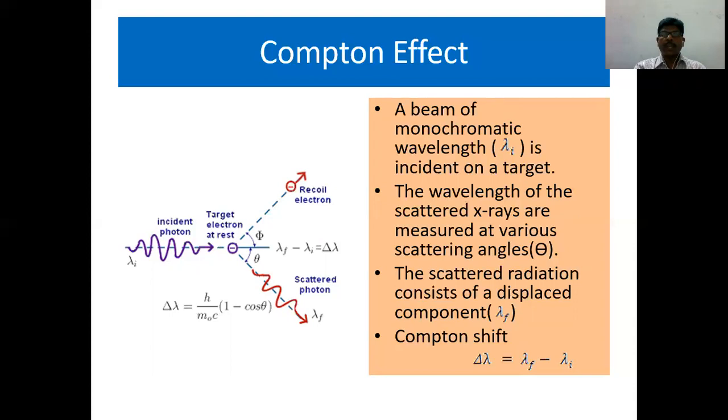The Compton effect as we have seen contains two components: unmodified component and a modified component. Lambda I is the unmodified component. Lambda F is the modified component. Lambda F is greater than lambda I. Why does this happen? When the photon loses energy, its frequency decreases and hence the wavelength will increase.